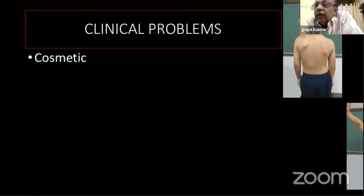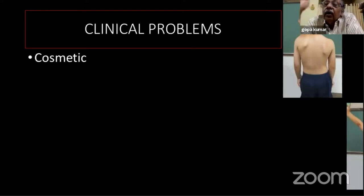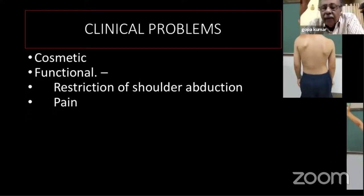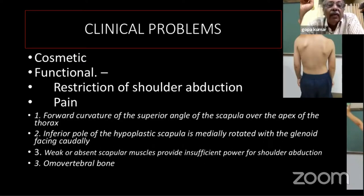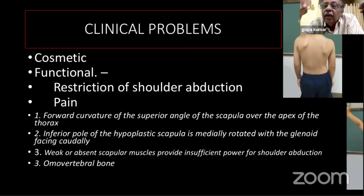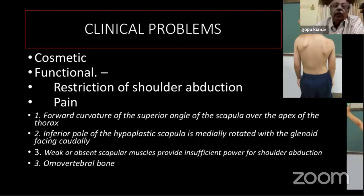The child usually comes with a cosmetic problem — asymmetry of the shoulder with one shoulder at a higher level — or a functional problem: restriction of shoulder abduction. Pain is very rare. The causes of restricted shoulder abduction are: first, the superior angle of the scapula is bent forward over the apex of the thorax; second, the inferior pole of the scapula is medially rotated with the glenoid facing caudally; third, some muscles are weak or absent providing insufficient power; and fourth, the omovertebral bone.